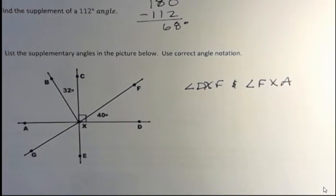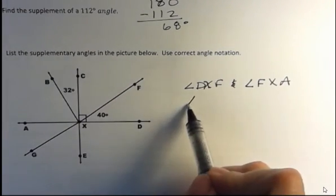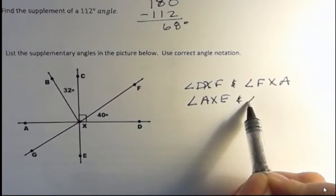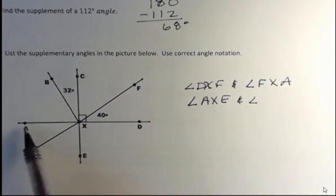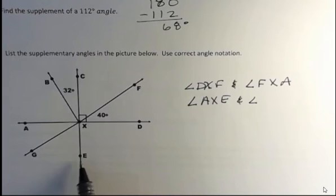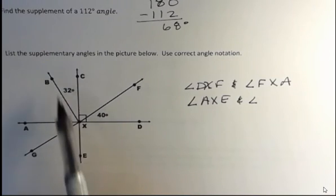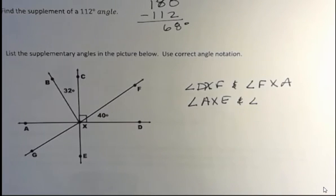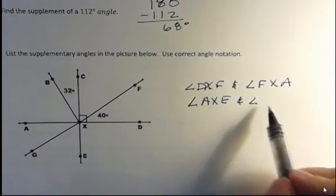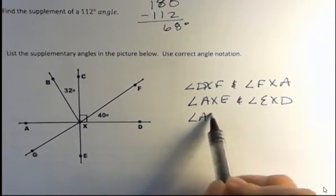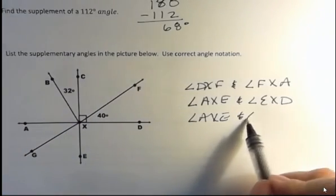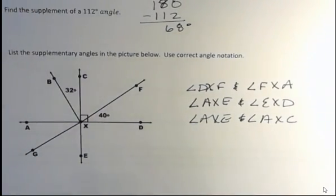What if I told you that I want to find the supplement of angle AXE? Well, AXE is this 90 degree angle right here. So the supplement to that could be two things. You might say angle AXC and it'd be supplementary here, or you could say angle EXD and it'd be supplementary there. Either one of those is true, right? Angle AXE and angle EXD. But you could have angle AXE and angle AXC.